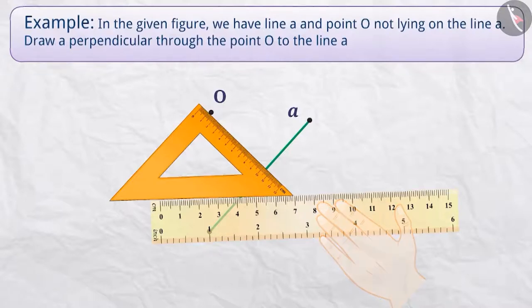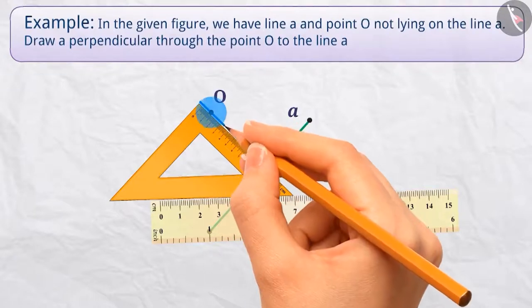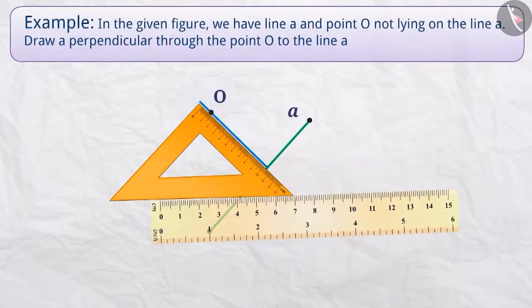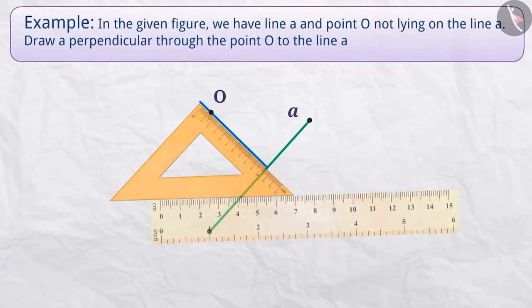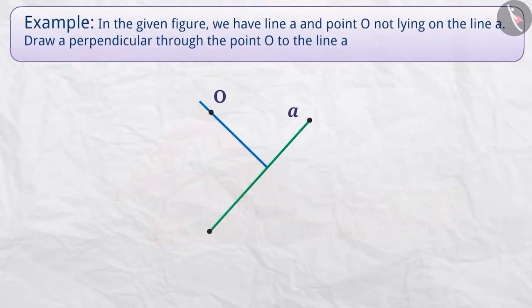Join the line segment O-N along the edge through O meeting A at N. Now, line segment O-N is the perpendicular line segment on line A.